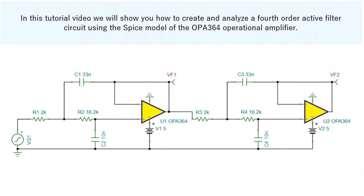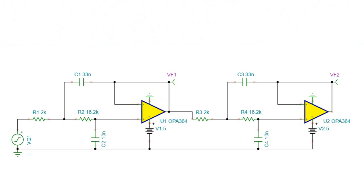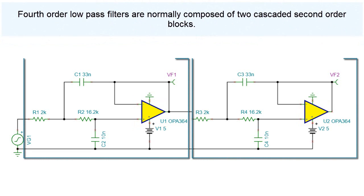In this tutorial video, we will show you how to create and analyze a 4th-order active filter circuit using the SPICE model of the OPA-364 operational amplifier. 4th-order low-pass filters are normally composed of two cascaded second-order blocks.